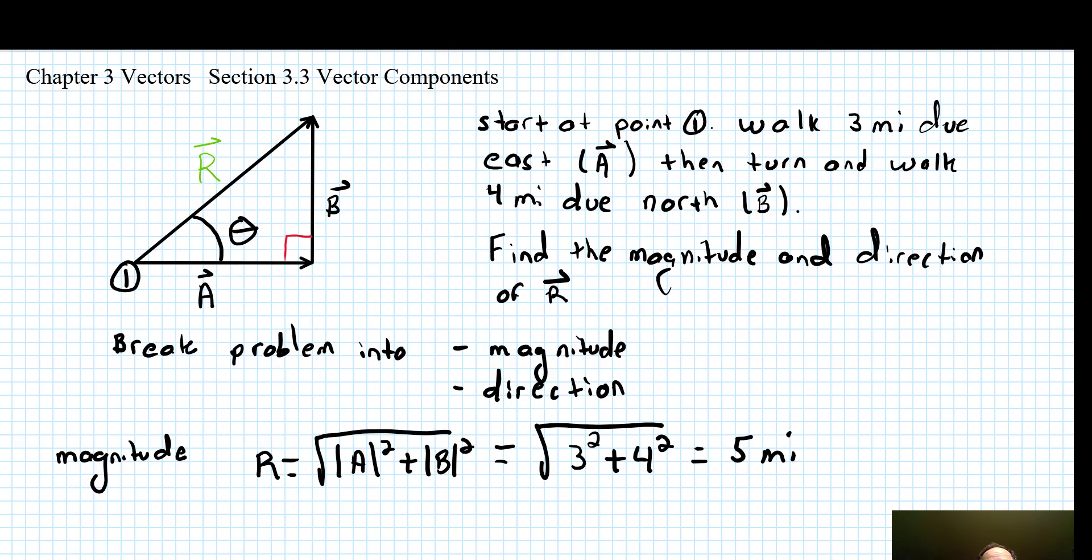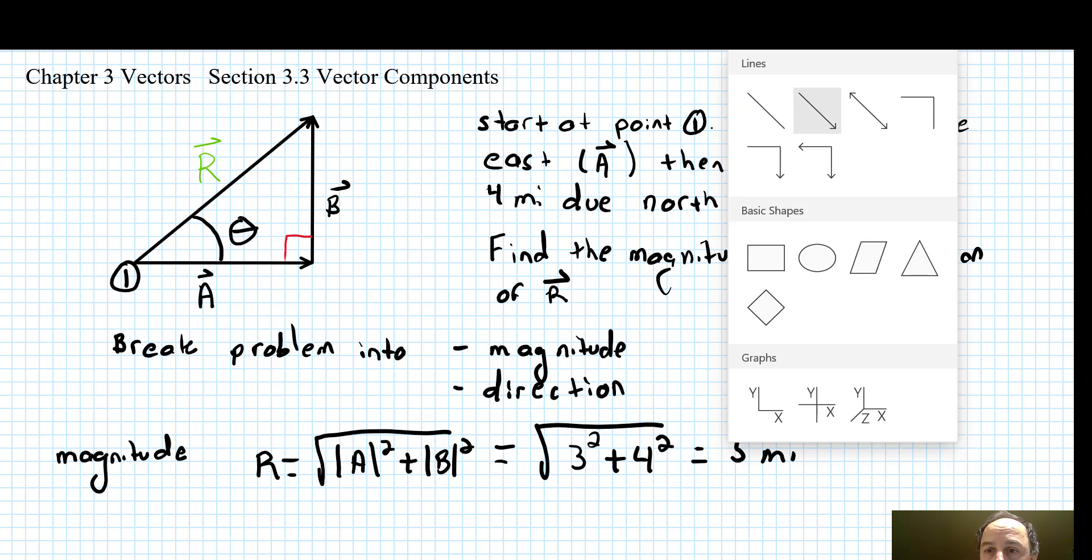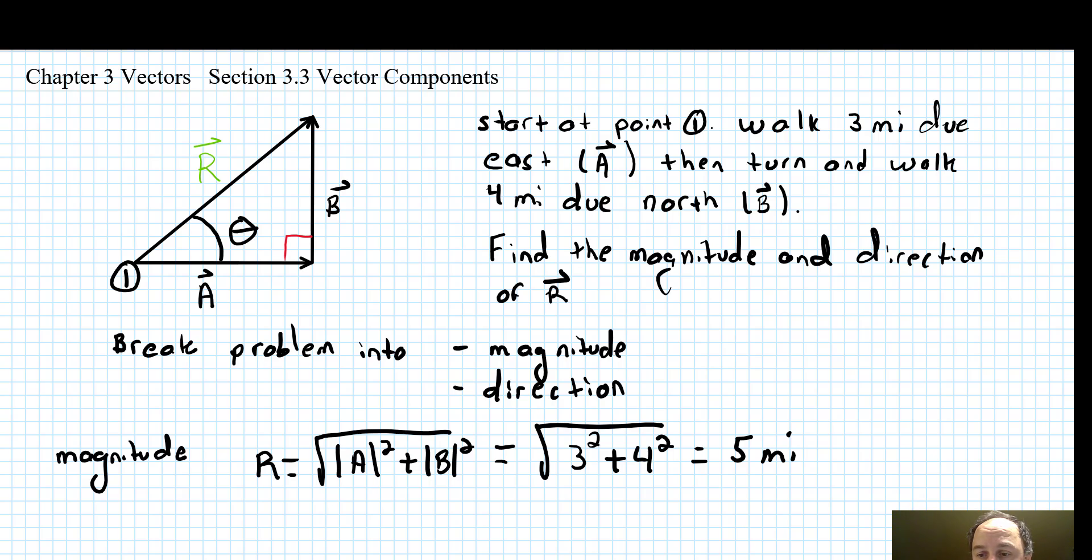So we have the magnitude. Now if we draw this, we have a 3, 4, 5 triangle. We know this is 3, this is 4, this is 5, and we know this is theta.